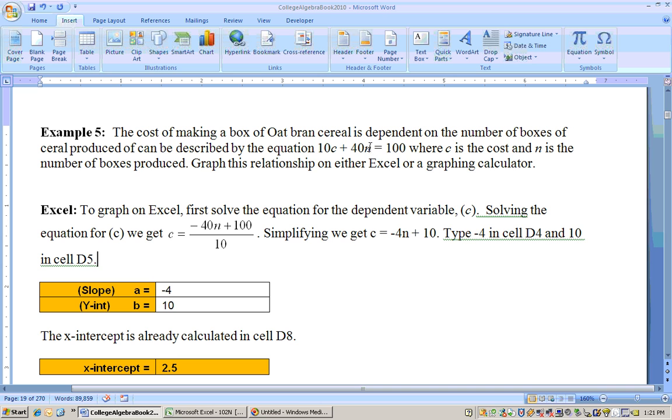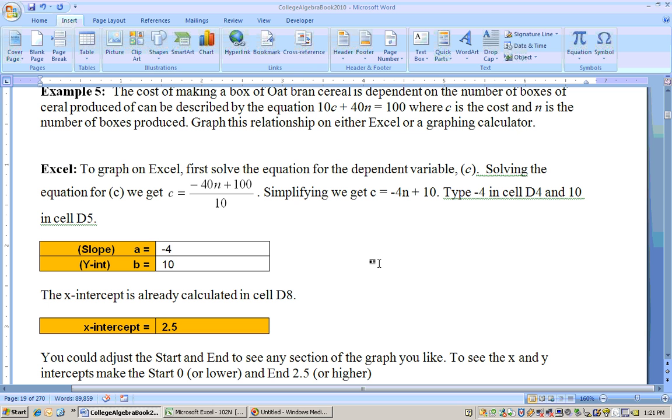To get the Y intercept, put 0 in for the X variable. That's the N. If you put 0 in for N, then you'd have 10C equals 100. Divide through by 10, and you get C equals 10. And that's your Y intercept. So that should pretty much do it there.